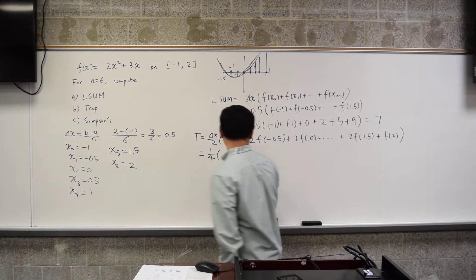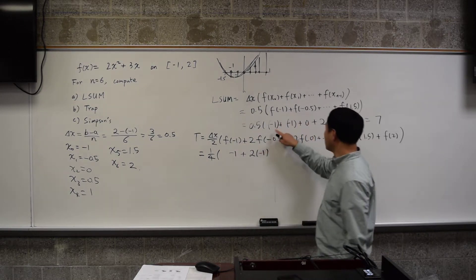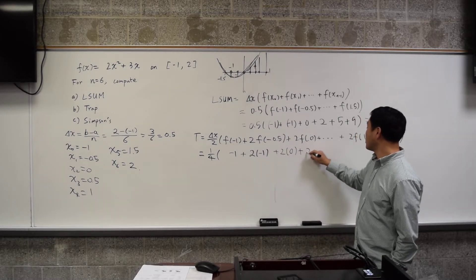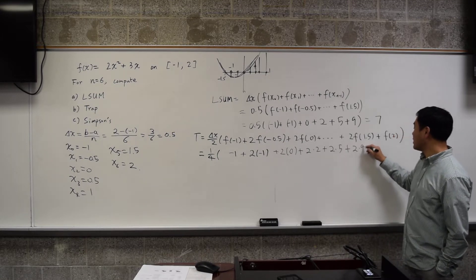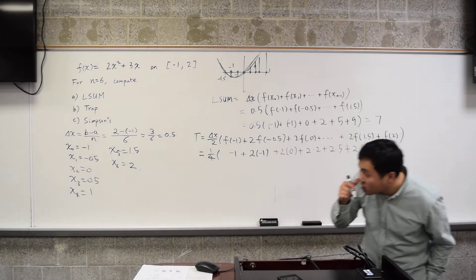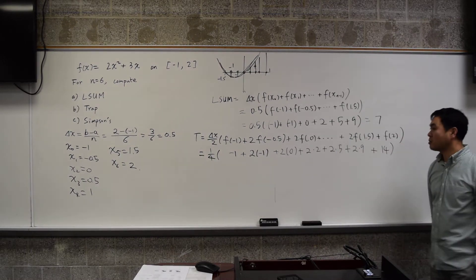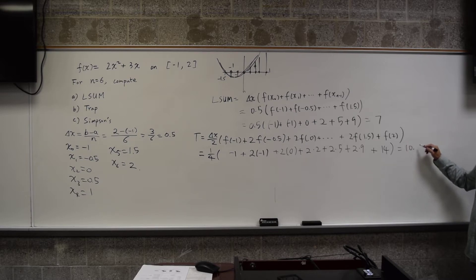Then these values will be, this will be negative 1 plus twice of negative 1. Basically this, twice of 0, twice of 2, twice of 5, twice of 9. And the very last one, which is 14, that one doesn't get multiplied by 2. Now, did anyone actually calculate this? Yeah, 10.75. 10.75, okay, so I'll just take your word for it. I think it's right, 10.75. Yeah, it is.